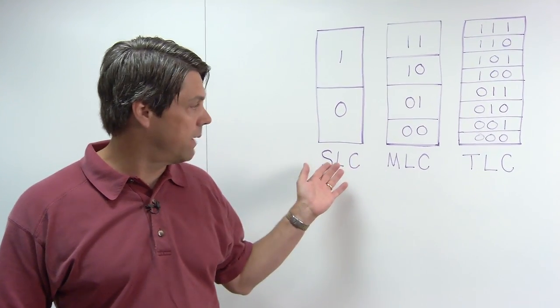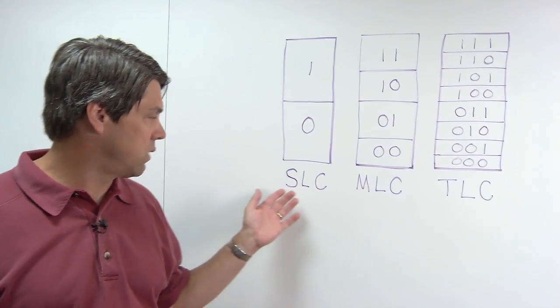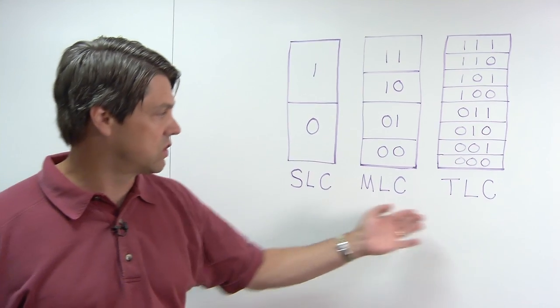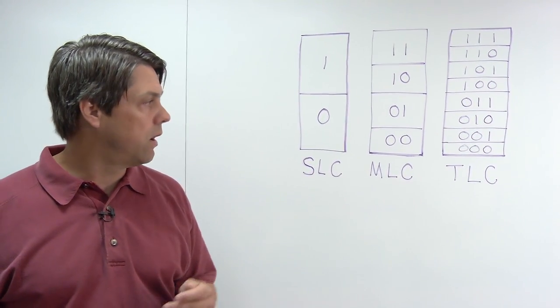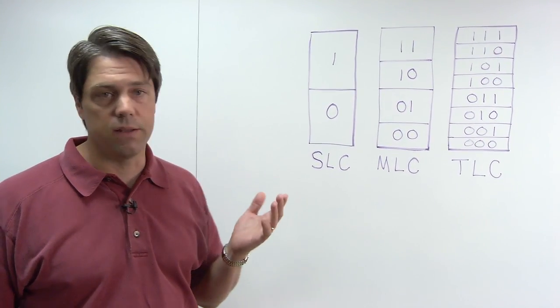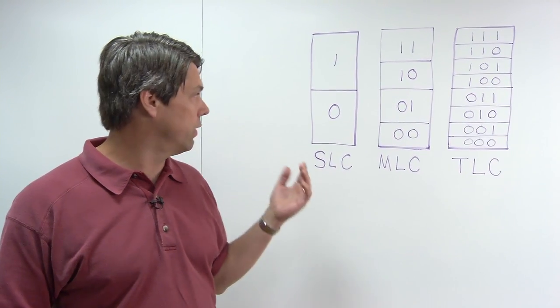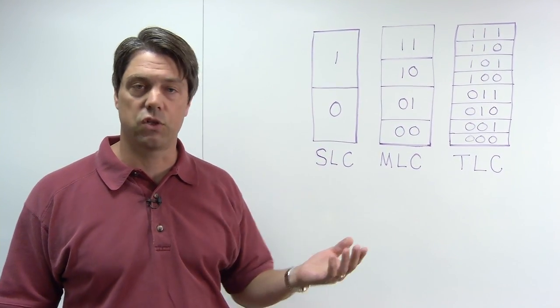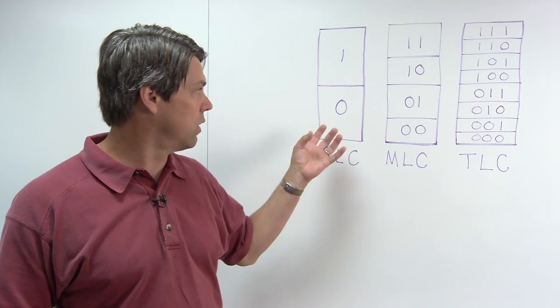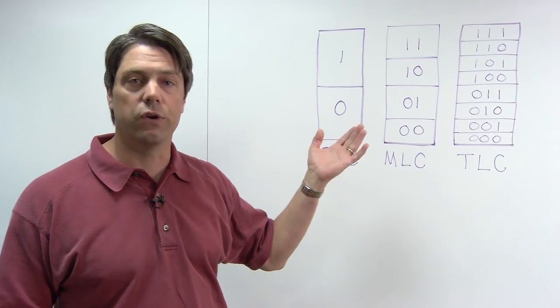And then this diagram will show the difference between a single level cell, multi-level cell, and triple level cell flash. In the flash world, or in the digital world of computers and consumer electronics, the basic storage element, or the bit, is a 1 or a 0.